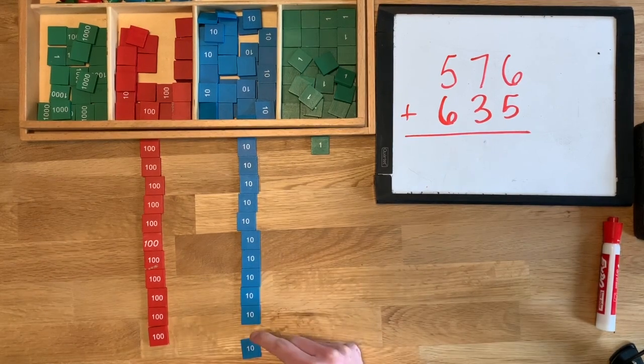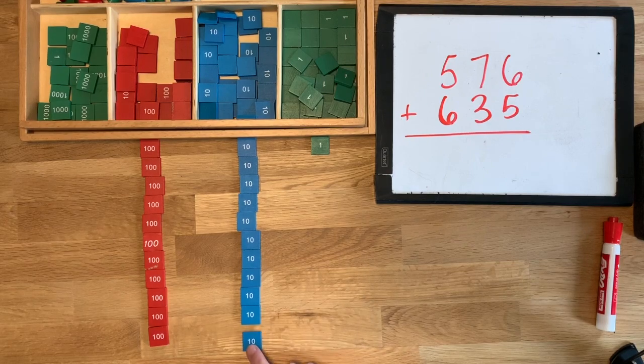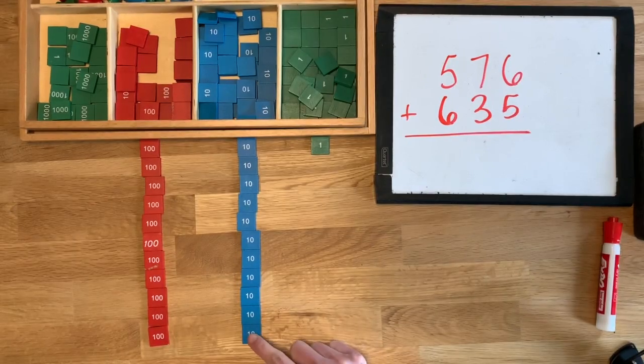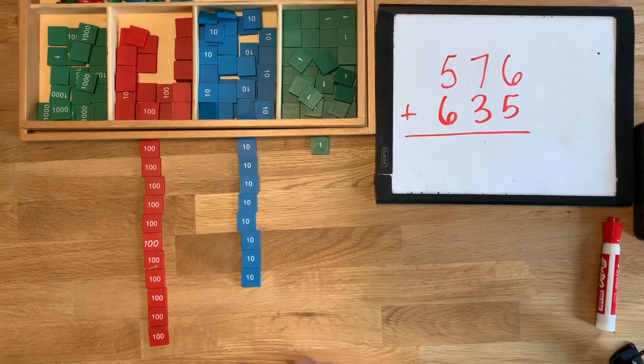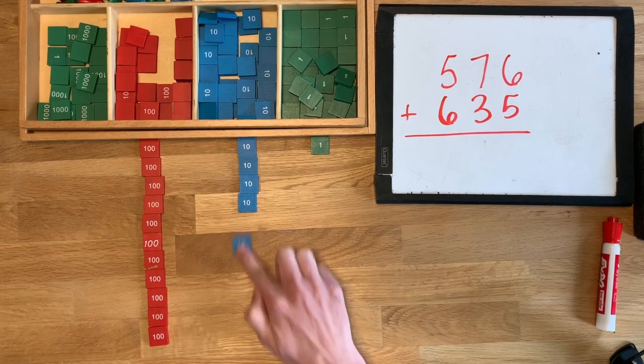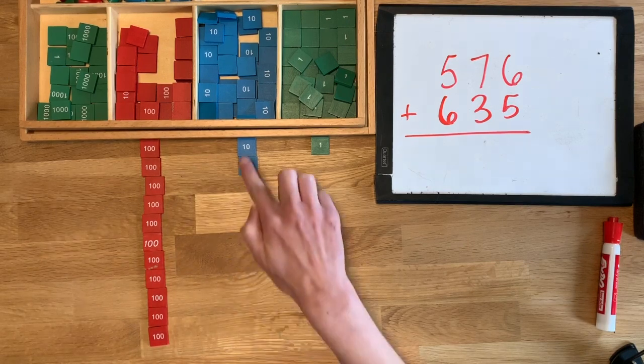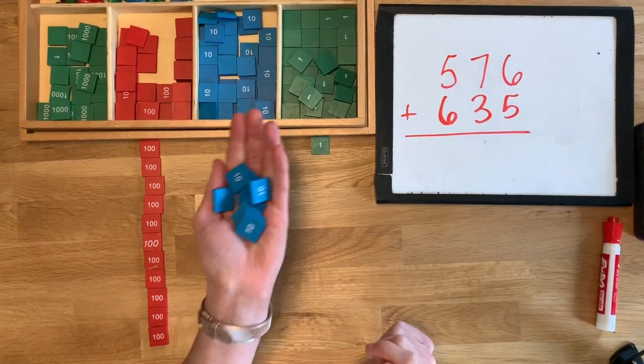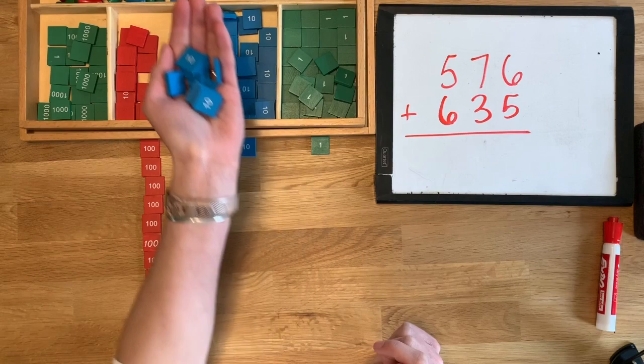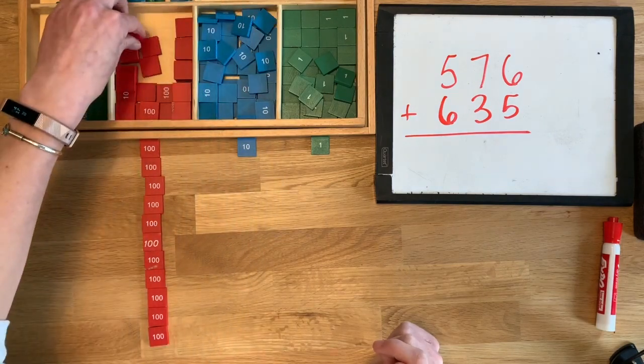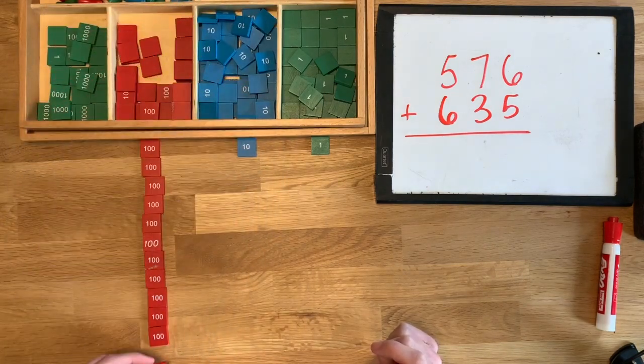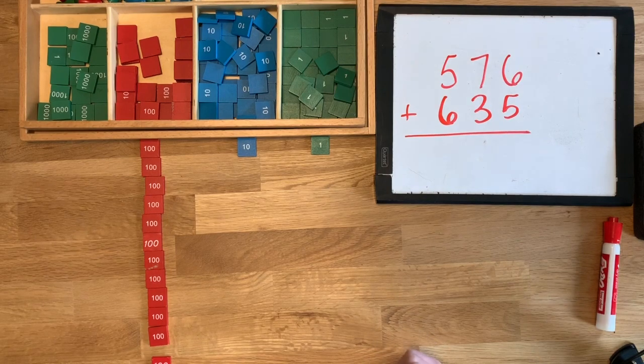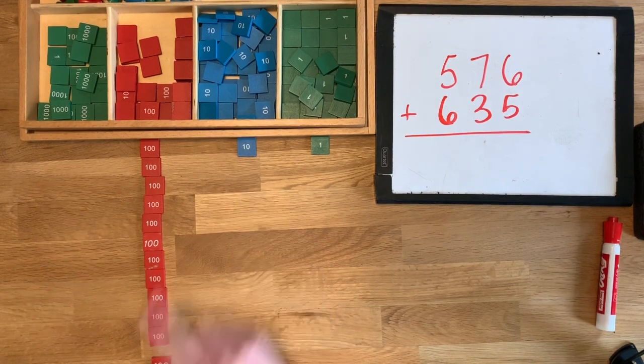So I'm going to go over to my tens. I have the one that I just got out. I'm going to push it up with the rest of them: 1, 2, 3, 4, 5, 6, 7, 8, 9, 10. Stop. I've got 10 tens. 10 is the magic number. 10 tens equals 100.